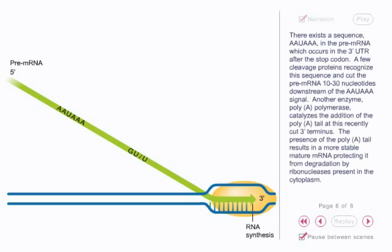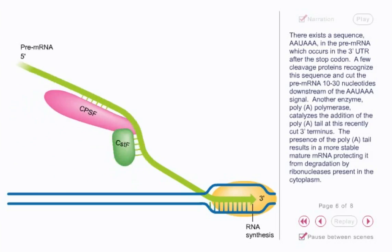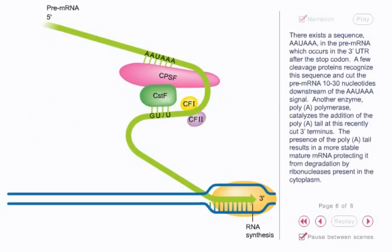There exists a sequence, AAUAAA, in the pre-mRNA, which occurs in the three-prime UTR after the stop codon. A few cleavage proteins recognize this sequence and cut the pre-mRNA 10 to 30 nucleotides downstream of the AAUAAA signal. Another enzyme, poly-A polymerase, catalyzes the addition of the poly-A tail at this recently cut three-prime terminus. The presence of the poly-A tail results in a more stable mature mRNA, protecting it from degradation by ribonucleases in the cytoplasm.